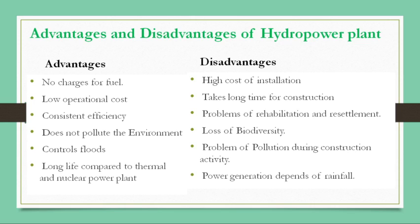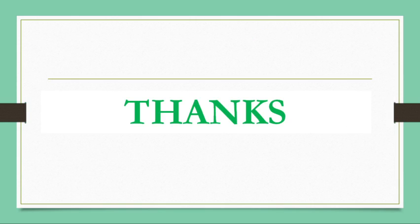Hydropower plants are part of renewable energy resources, so we must appreciate the installation of more and more hydropower plants so that we can save our non-renewable energy resources such as coal, petrol, and diesel. Water can be renewed every year during the monsoon period, so hydropower plants can solve our problem of energy crisis in the future. That was all about today's lecture, ending our discussion on renewable energy resources. Thank you very much.